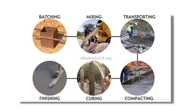The next stage is mixing. Mixing is done in two ways: hand mixing and machine mixing. Machine mixing is done by using a tilting type mixer, a non-tilting type mixer, and a batching plant.